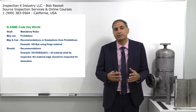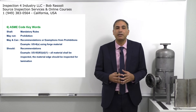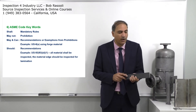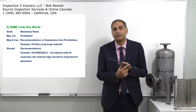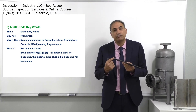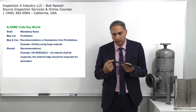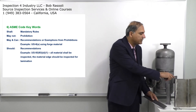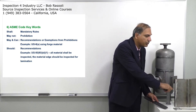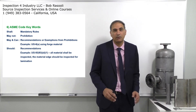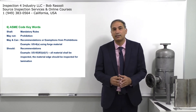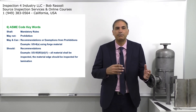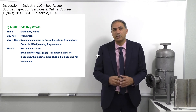But the next sentence says the material edge 'should' be inspected for lamination. If it's SA-516 Grade 70 plate, the word 'should' means it's a recommendation — we should inspect the edges to make sure there is no lamination, but it's not mandatory like 'shall.' This is the key difference between 'shall,' 'should,' 'may not,' and 'may' or 'can,' which we need to know.